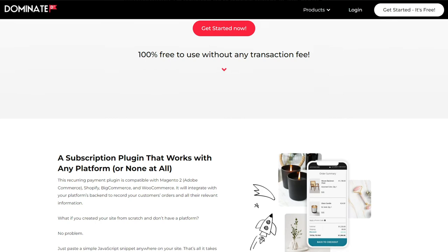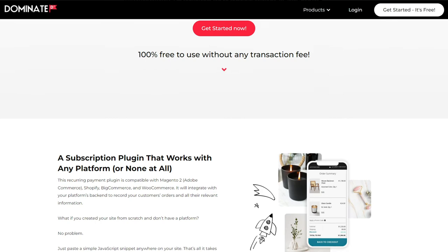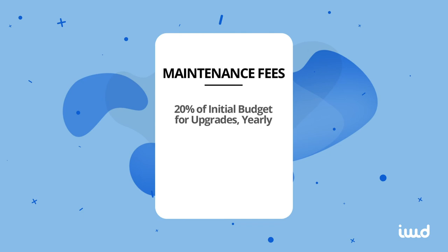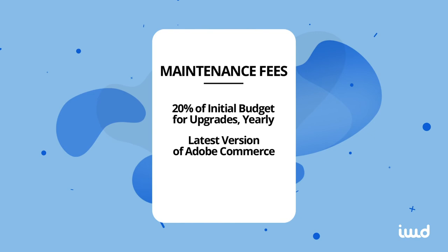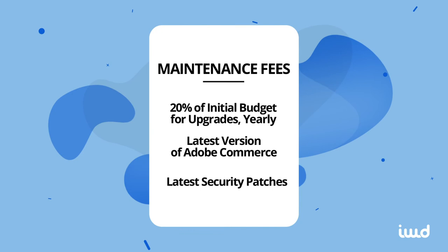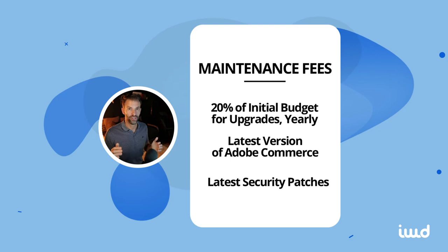The other cost to consider is maintenance and upgrades. As your store gets more complex with more apps, it becomes harder to maintain and upgrade to the next version. About 20% of your initial budget should go to annual upgrades to keep the latest version of Adobe Commerce and ensure you have all the latest security patches. If you don't upgrade your system, you won't have the latest features, and the security of your site will drop dramatically.